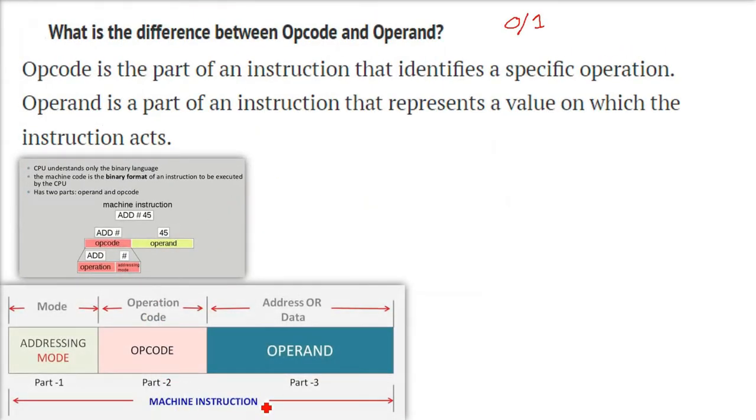So you can divide this machine instruction into three parts. The op code itself says what is the addressing mode and on which data it is going to work, that will be the operand.